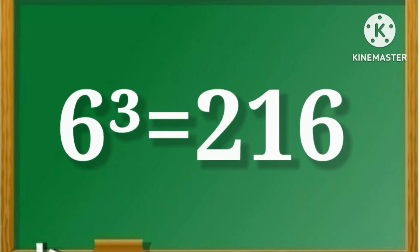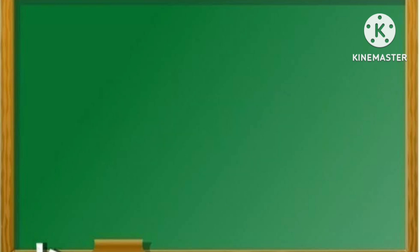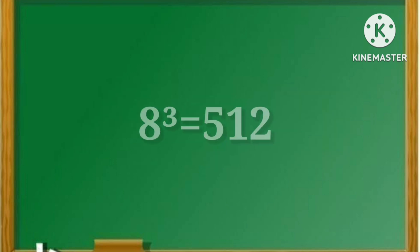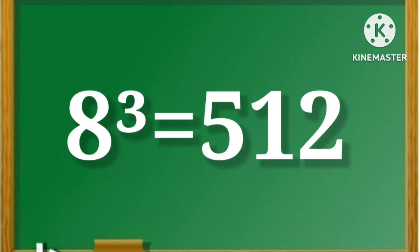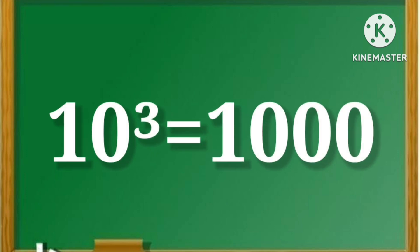6 cube is equal to 216. 7 cube is equal to 343. 8 cube is equal to 512. 9 cube is equal to 729. 10 cube is equal to 1000.